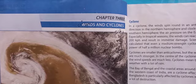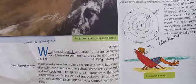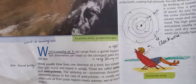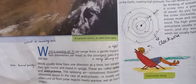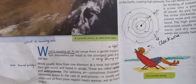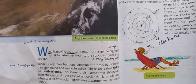First of all, we read about winds. Wind is moving air. It can range from a gentle breeze — gentle breeze means a light wind — at 5 km per hour to the strongest gales of over 200 km per hour. Winds usually blow from one direction at a time, but sometimes they spin. Spin means turn round quickly, and round in spirals. Spiral means in the shape of a spring.